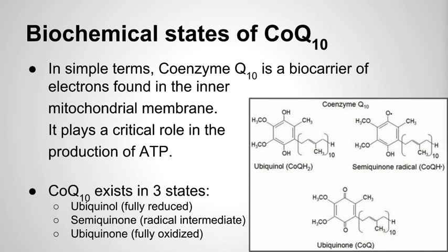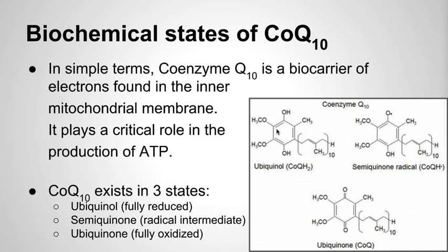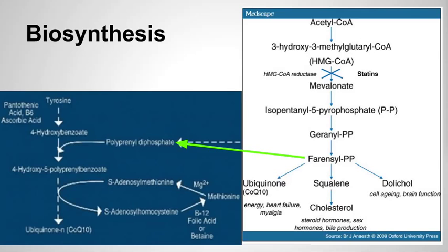As for the biosynthetic pathway, CoQ10 has a benzoquinone structure with a decaprenyl side chain. The quinone ring comes from tyrosine or phenylalanine, while the side chain comes via the mevalinate pathway, which also contributes to cholesterol and dolichol synthesis—helping with hormone production, cellular aging, and brain function. Ultimately, farnesyl pyrophosphate contributes its isoprenoid side chain to the benzoquinone structure to form ubiquinone.